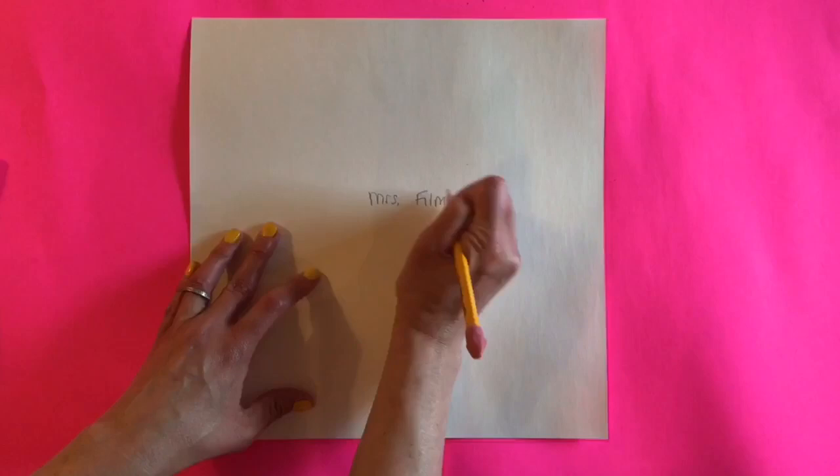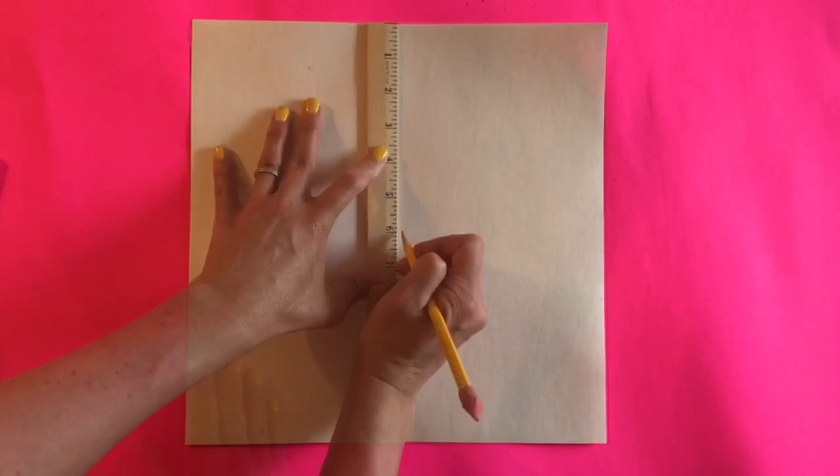On your 12 inch square paper, write your name and class on the back. Flip it over and find the center of the paper using a ruler. This marks the spot where we're going to start painting.